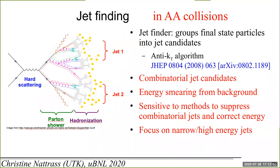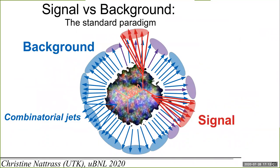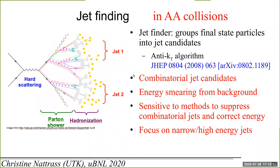In jet finding in AA collisions, we get energy smearing because the real jet's red particles are overlapping in space with blue and purple background particles — we correct for that. We have methods to suppress combinatorial jets. I do not think these are benign methods — they're not necessarily wrong, but they're doing more than just giving you the right answer all the time. We also tend to focus on narrow and high-energy jets, not because they're more interesting but because we can measure them.